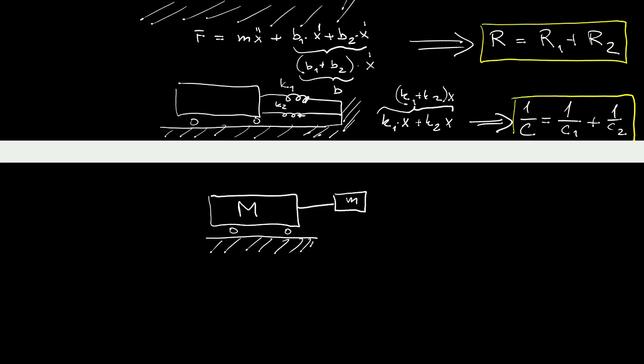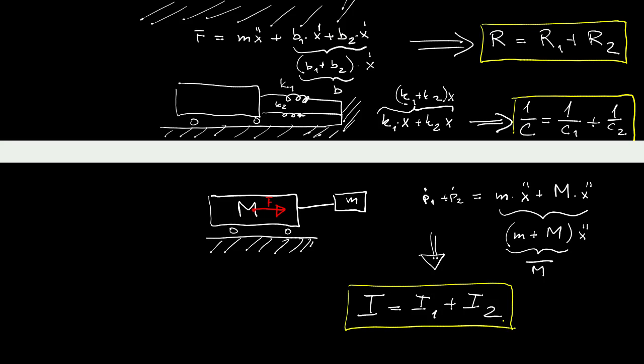And the last scenario for type 1 junction when we are combining or actually attaching one mass to another, since the momentums must add hence the masses must add as well and the general conclusion is that inertances add.